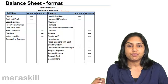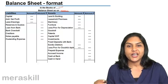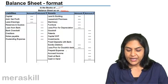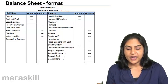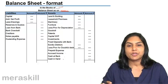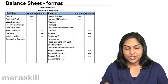We could also have less provision for discount on debtors as we had discussed earlier, prepaid expenses, accrued income, cash at bank, cash in hand. These are a list of some of the assets which could come on the asset side of the balance sheet.